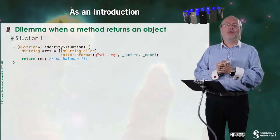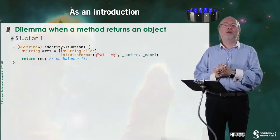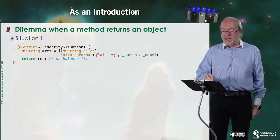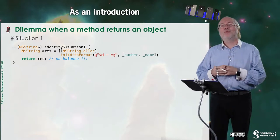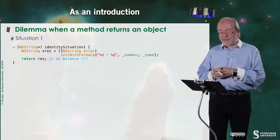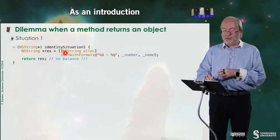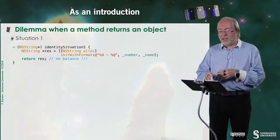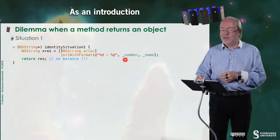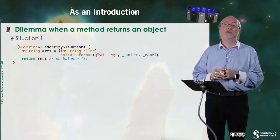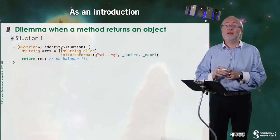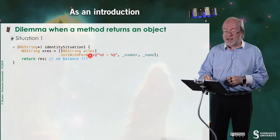There is a dilemma when a method returns an object. Let's have a look at a first situation. Here, I am supposed to return the identity of a student. So, the first thing I can do is to create a new object, a new NSString — NSString alloc init with format — and then I will append the number and the name. I create this NSString and I return it. But, as you know, this results in a reference counter set to 1, because I use alloc and init. That's the rule.